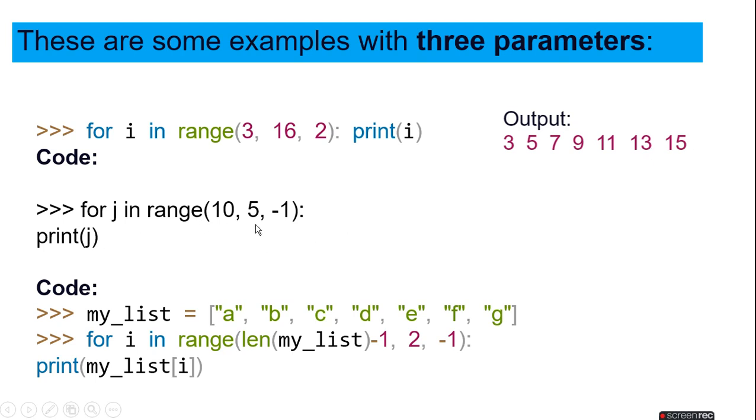For j in range 10, 5, minus 1, it will reverse the output and give you 10, 9, 8, 7, 6. Up to 6 it will print.